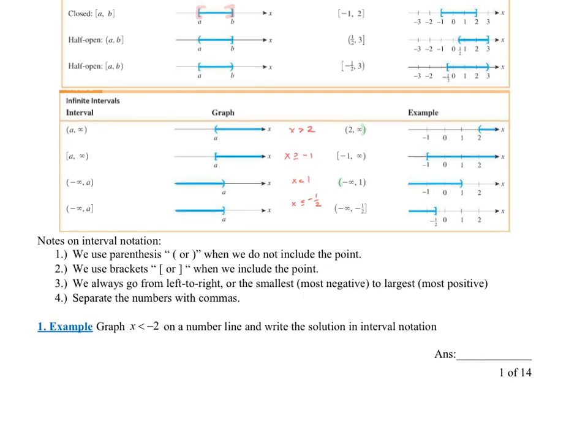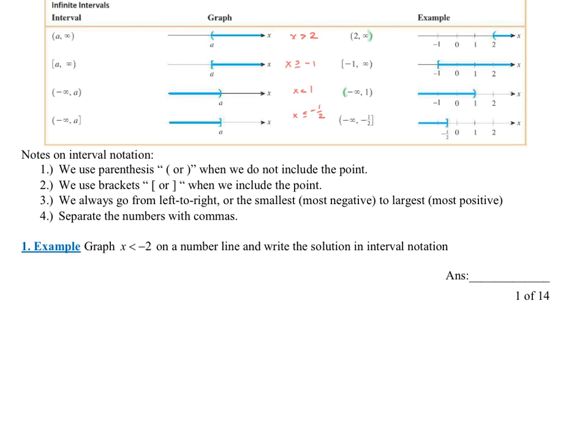Let's look at these notes right here. It says we use parentheses when we do not include the point. So parentheses are when you do not include it and you use brackets when you do include it. And here's a really important note for you. Always go from left to right or smallest, which is most negative to largest, but you always want to go from left to right. When you're writing intervals, you could never do something like five comma three because three is smaller than five. And then you separate the numbers with commas.